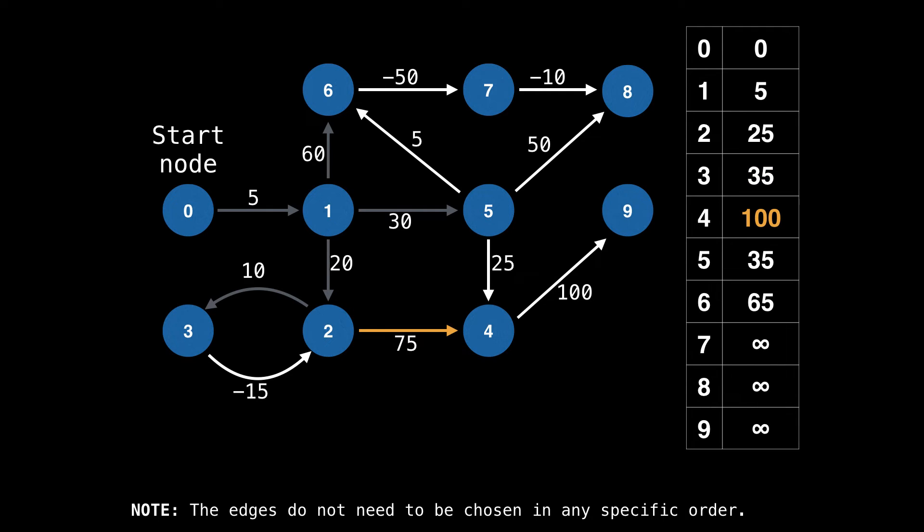Then the edge from 2 to 4 updates to a best value of 100. Up next is an interesting edge because it was able to update node 2's best value from 25 to 20 by taking the value in node 3, which is currently 35, adding a weight of minus 15 and giving us a better value of 20.